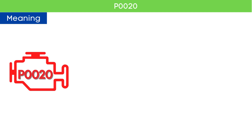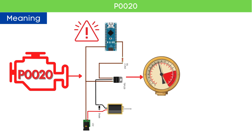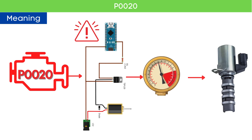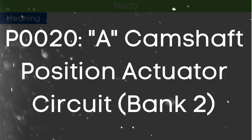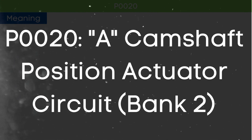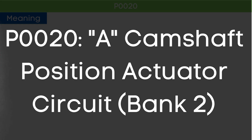The P0020 code means that the ECM has detected a circuit issue with the solenoid actuator that directs oil pressure to the engine's variable valve timing system. It indicates an issue with the camshaft position actuator circuit for bank 2, specifically referring to the intake camshaft.